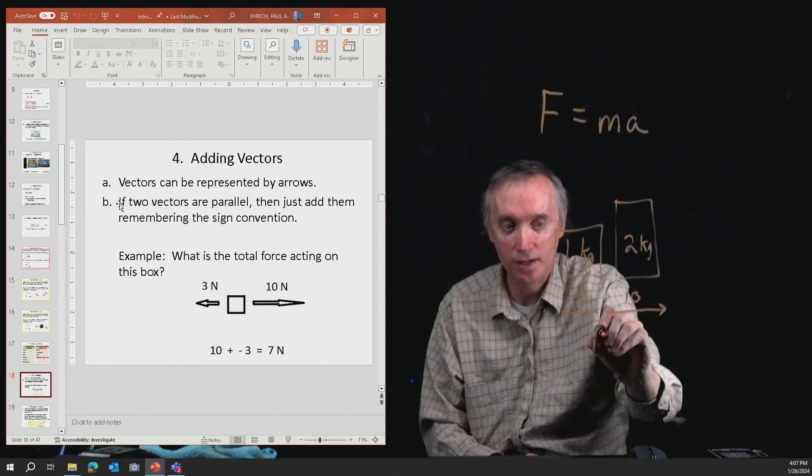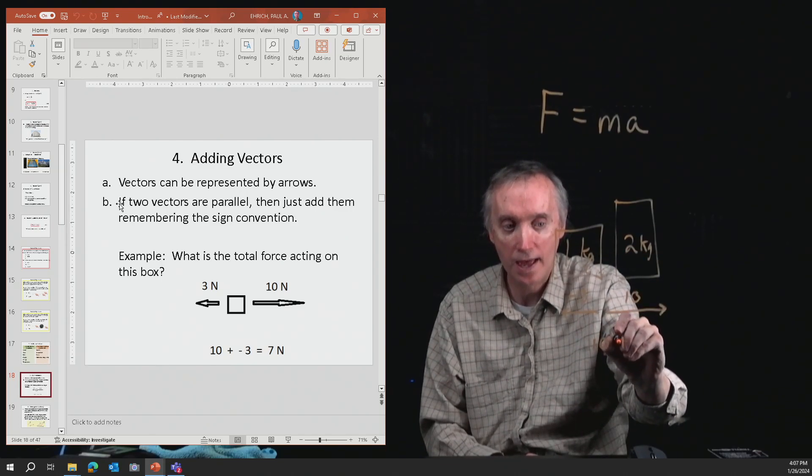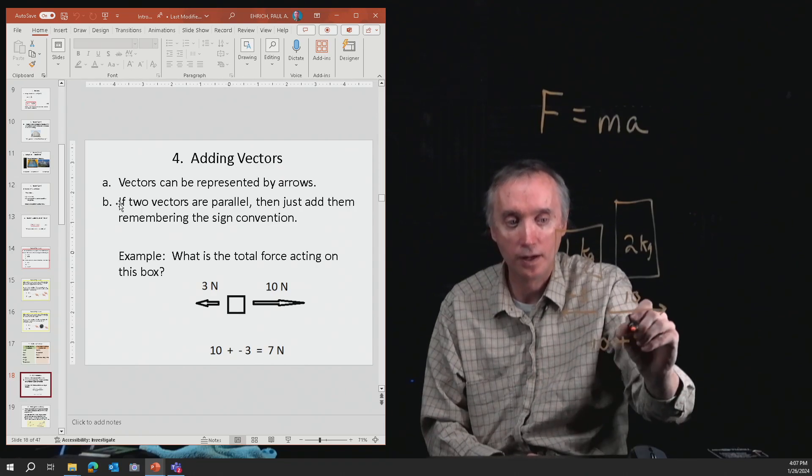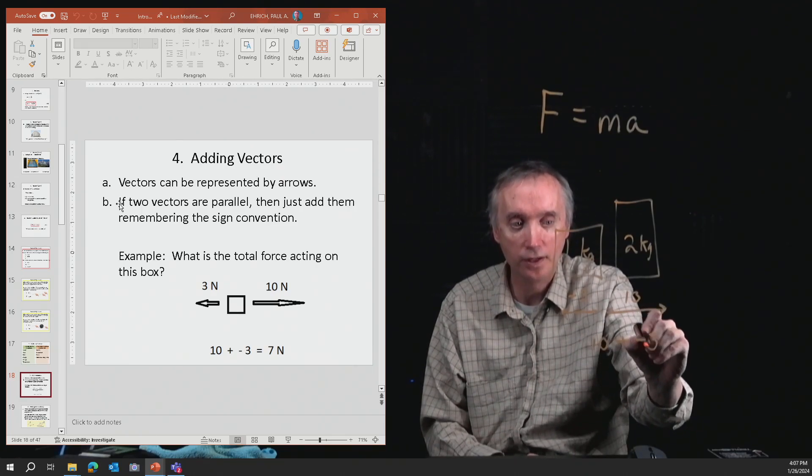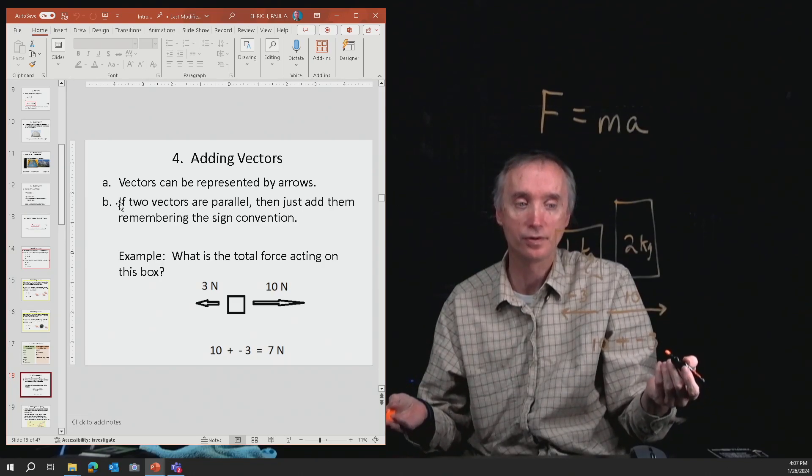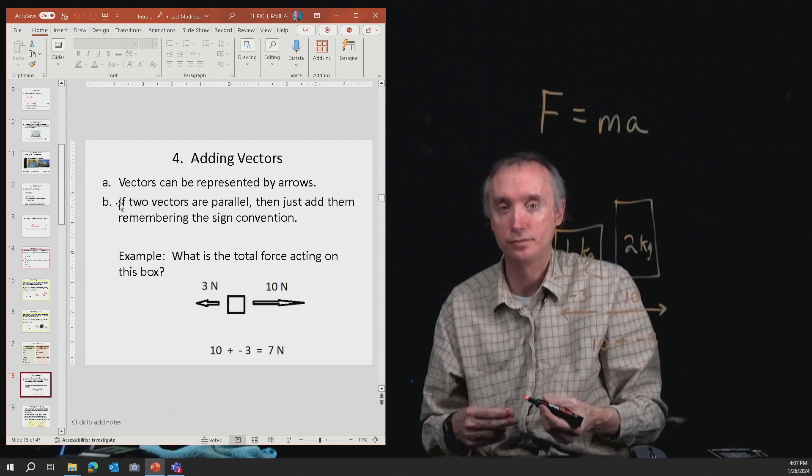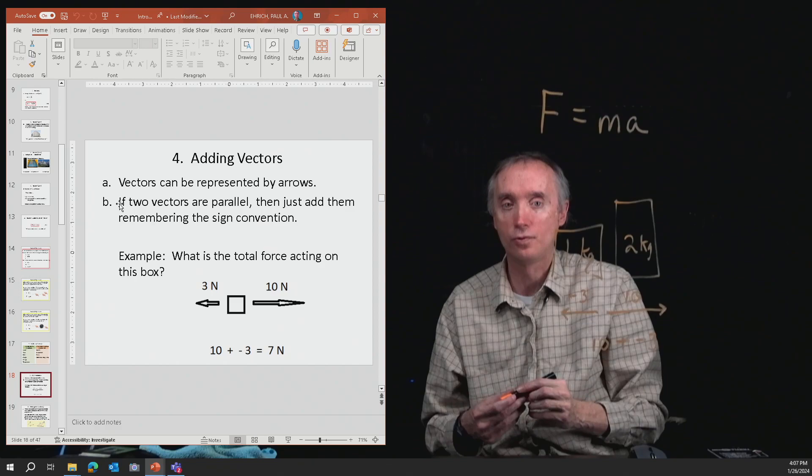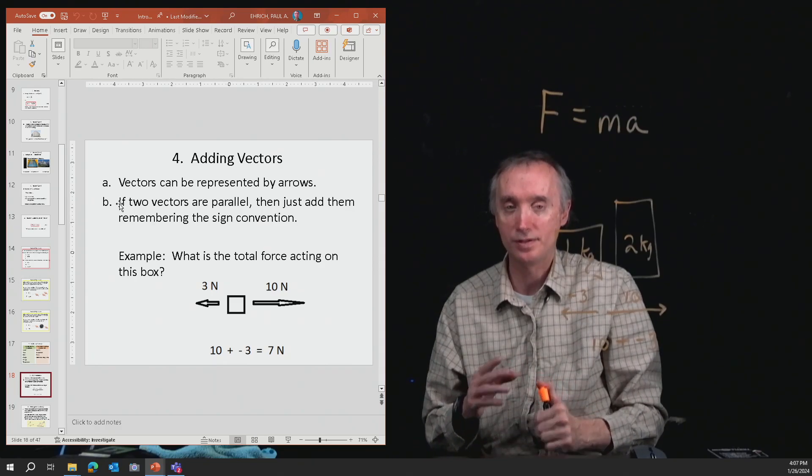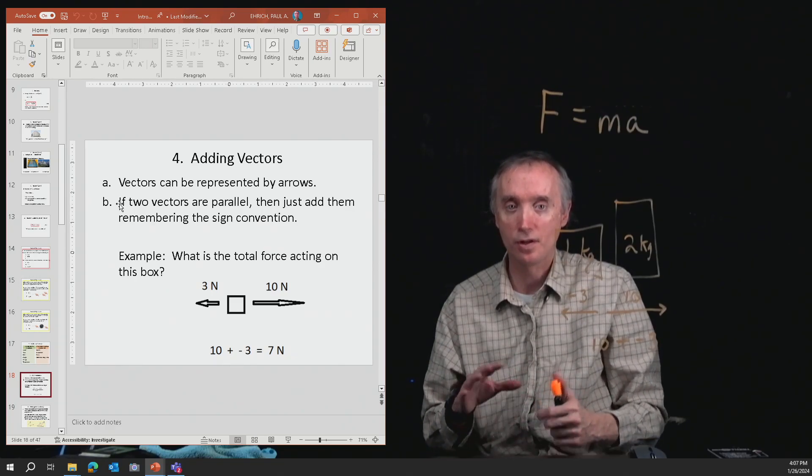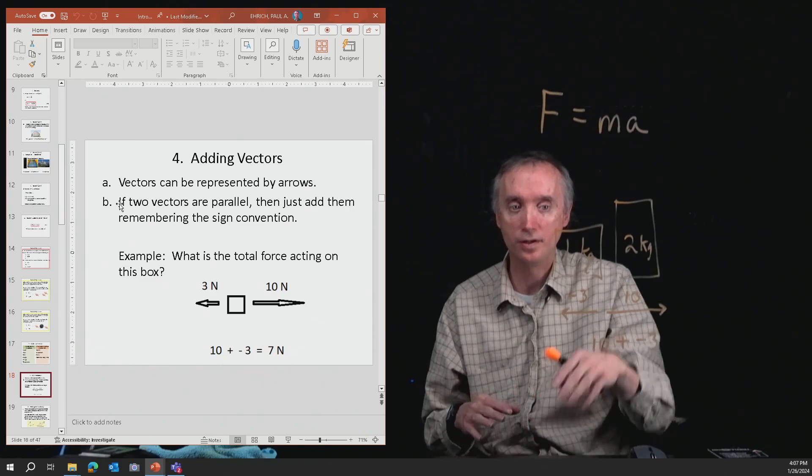So we're going to take ten and add them together, but it's going to be plus negative three, which is the same thing as ten minus three, which is going to be seven. So therefore, the total force acting on it is going to be seven newtons. So as long as your forces are in the same plane, it's not so bad adding vectors together.